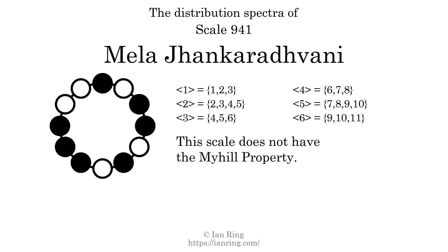If every spectrum has exactly two specific intervals, we call that the Myhill property. This scale does not have the Myhill property. Since the generic interval ranges overlap, this scale is an improper scale.